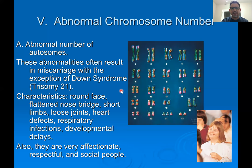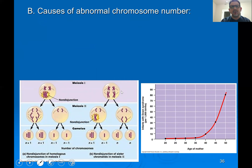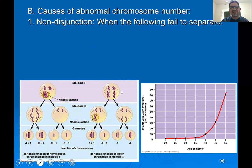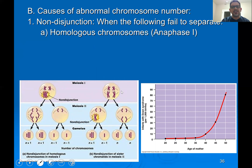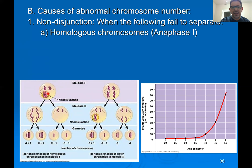How does that happen? Abnormal numbers of chromosomes are the result of an accident known as non-disjunction. Non-disjunction means that something is failing to separate. In anaphase I of meiosis I, that is when pairs of chromosomes should be separated. In the illustration, you can see two homologous chromosomes forming a tetrad that are not separating — they are not splitting. Both are being pulled over to one cell. Another pair of homologous chromosomes has successfully separated and is traveling to opposite sides of the cell.